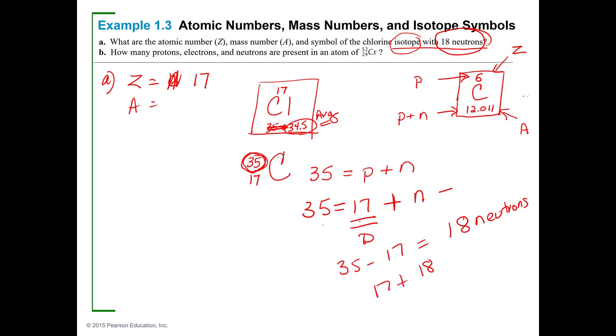So 17 plus 18 is the mass based on the neutrons and the protons. Since you have 18 neutrons and 17 protons and most all of the mass because the electrons are so tiny, then the mass would be 35 and that's for that isotope. Now I didn't leave myself a whole lot of room, so I'm going to take this little part right here and do part B.